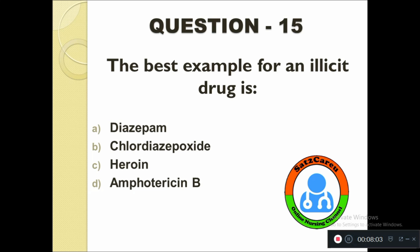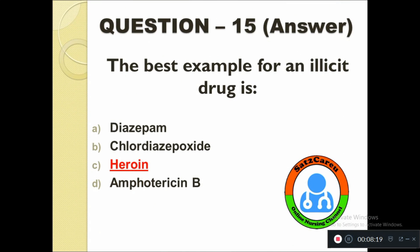Question number fifteen: The best example for an illicit drug is — option A: Diazepam, B: Chlordiazepoxide, C: Heroin, D: Amphotericin B. The correct answer is Heroin.